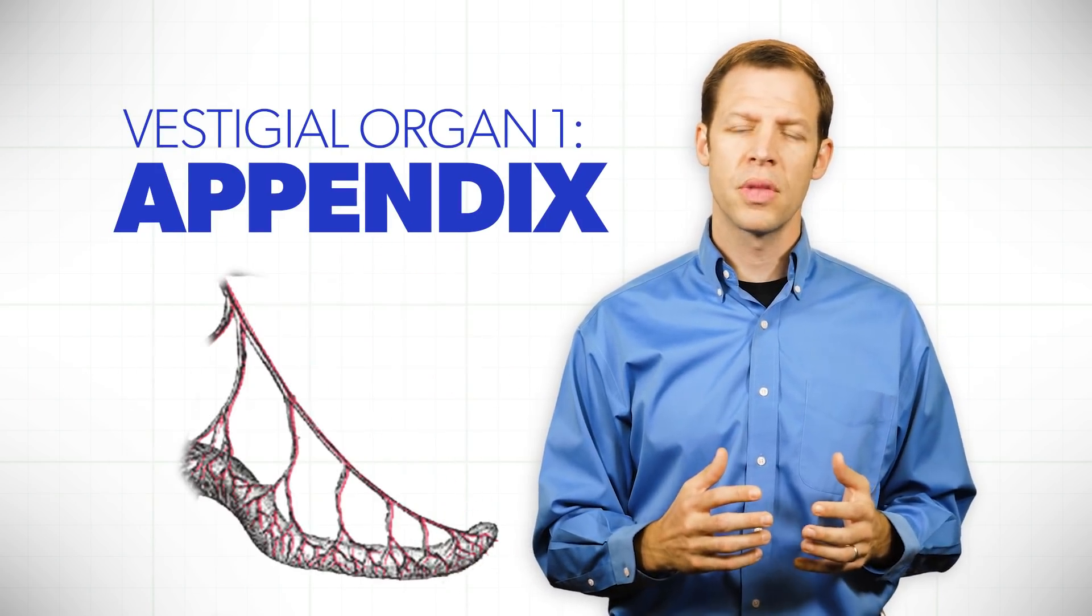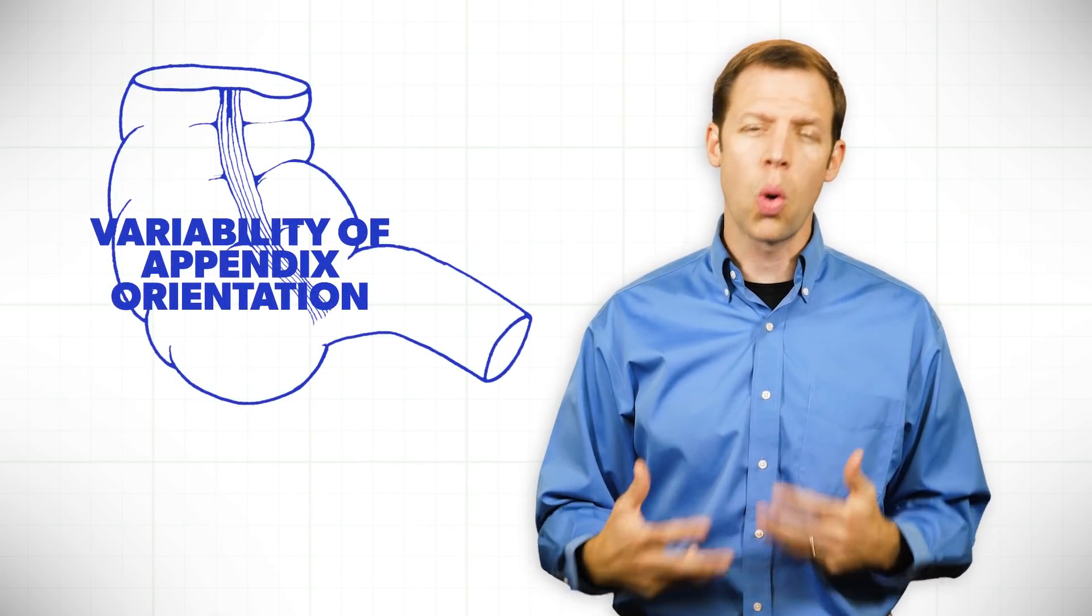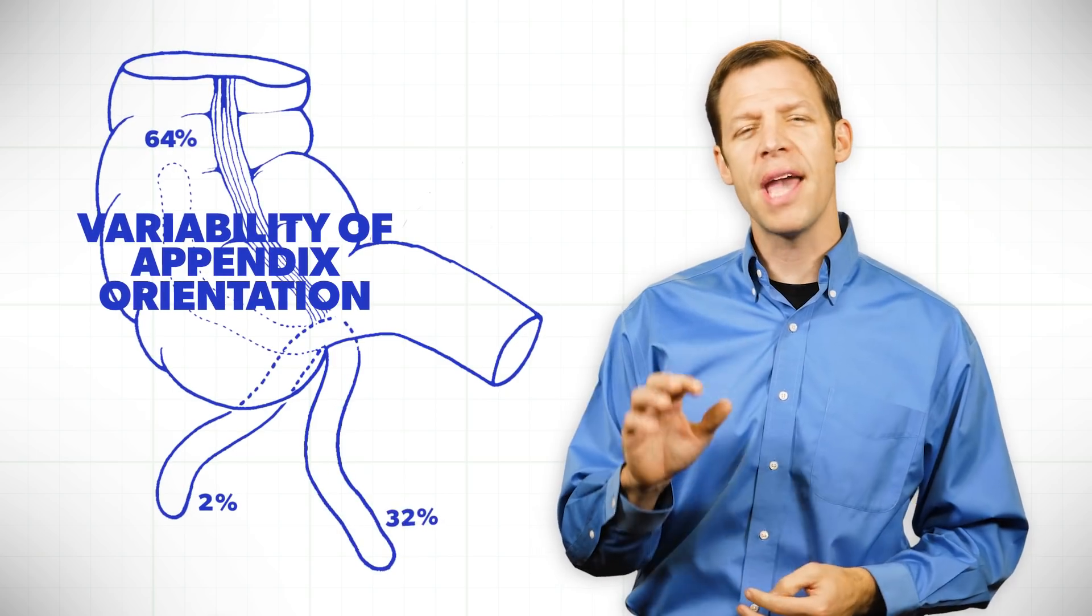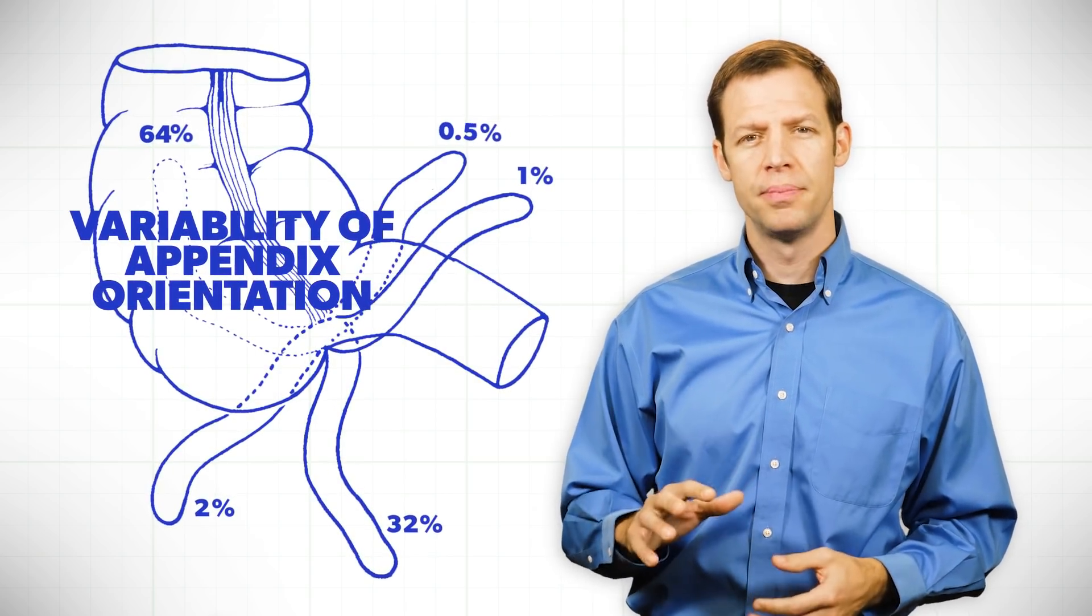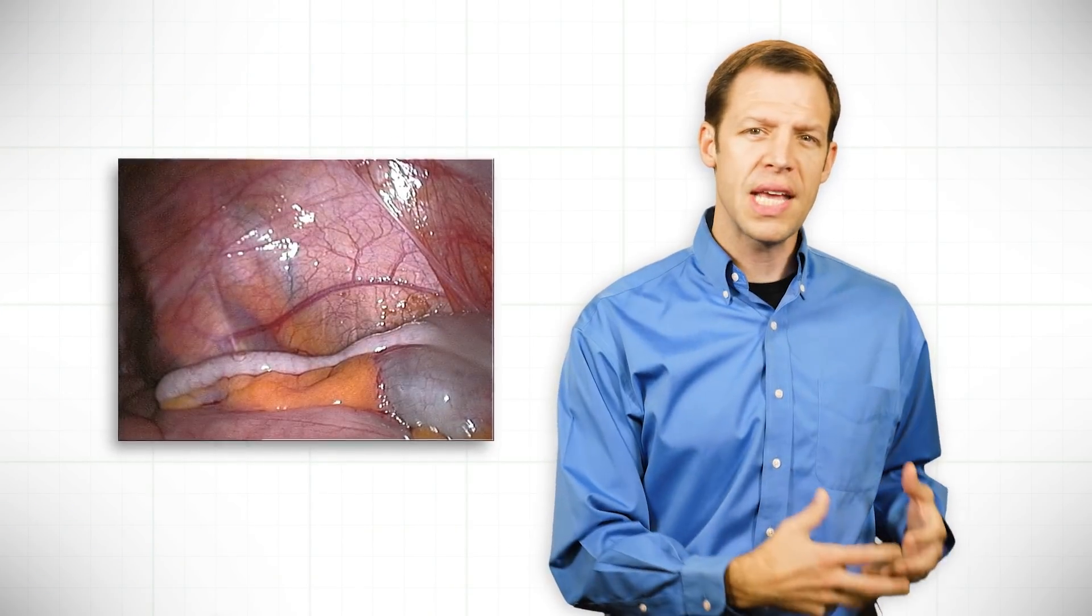Number one, the appendix. For many years, people thought the appendix was a useless organ that was left over, one biologist said, from a plant-eating ancestor.